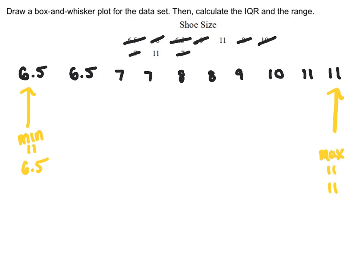The median is the middle number. We have 10 data points, so the median goes in between the fifth and the sixth values. Both are 8, so the median is 8 plus 8 divided by 2, which equals 8. However, this won't always be the case.